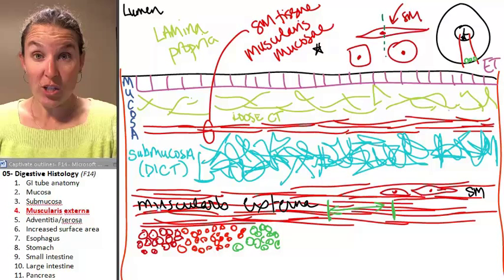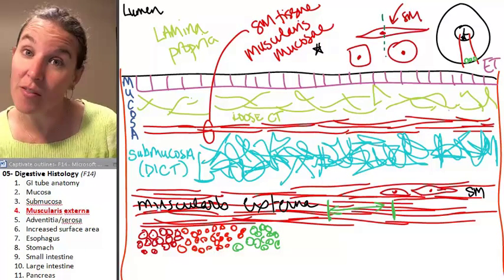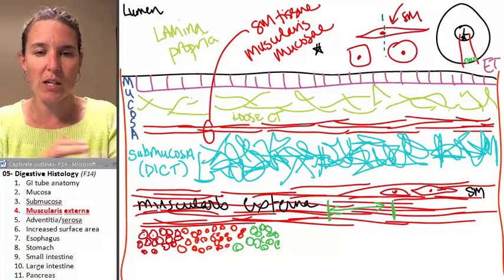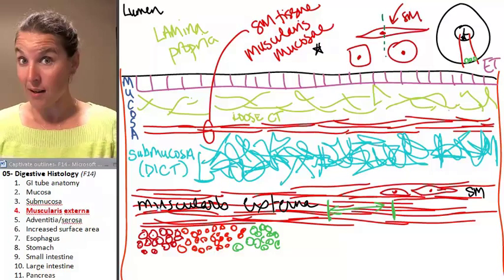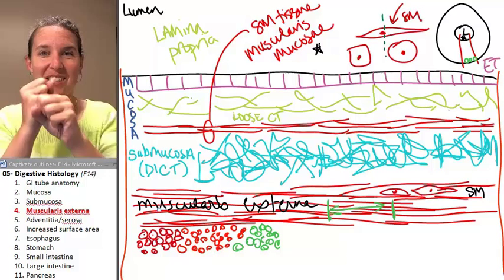One of the functions of the digestive system is to move stuff through. You have to move your food through from the start to the finish and in order to get your stuff to move, your muscle tissue, your smooth muscle has to contract.